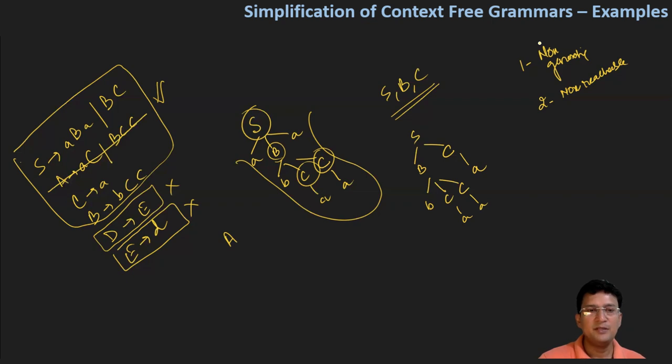So we have S produces A, B, A, and BC. C produces small a. B produces b, C, and C. These are the valid productions of the simplified grammar.